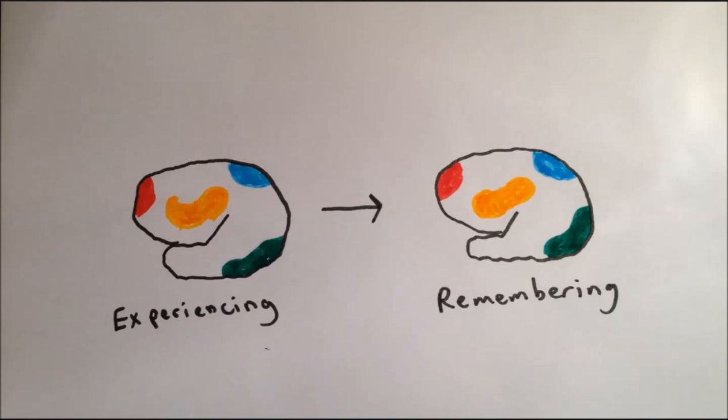The hippocampus acts as an index, storing the different patterns of neocortex activity associated with all our different memories. The process is thought to be as follows.